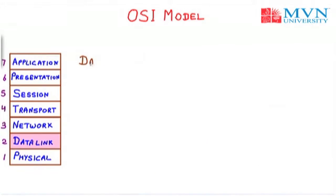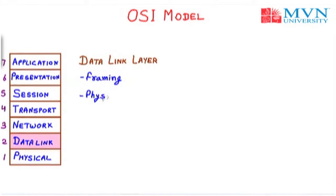Next we have the second layer — the data link layer. It has various functions. The first is framing: the data link layer divides data streams into small frames by adding a header as well as a trailer to the data. Second, data link is used for physical addressing. There are two types of addressing — physical addressing (used to send data within a particular network) and logical addressing (used when sending data from outside the network, requiring an IP address).